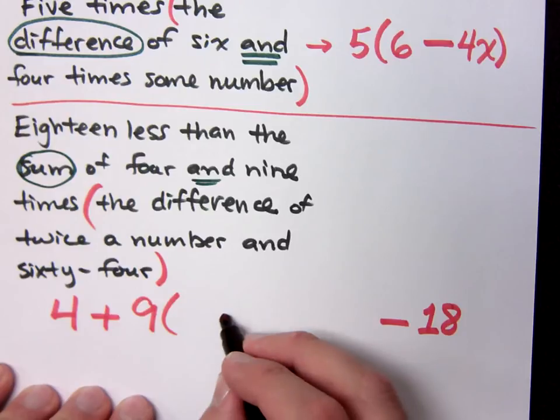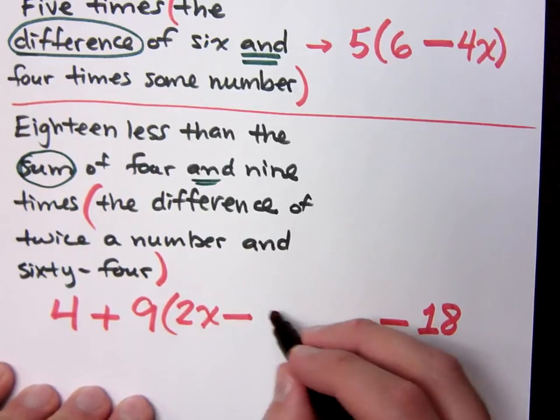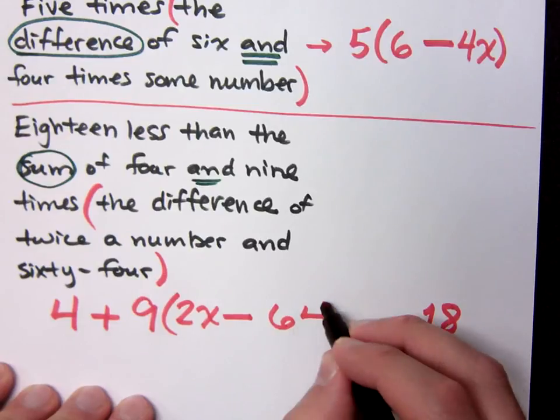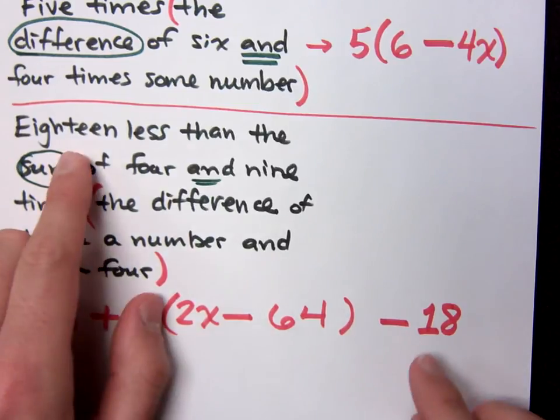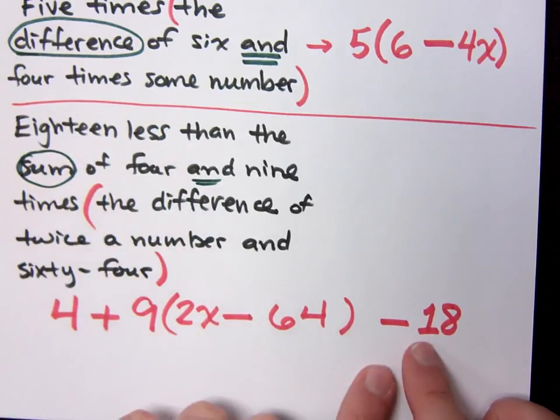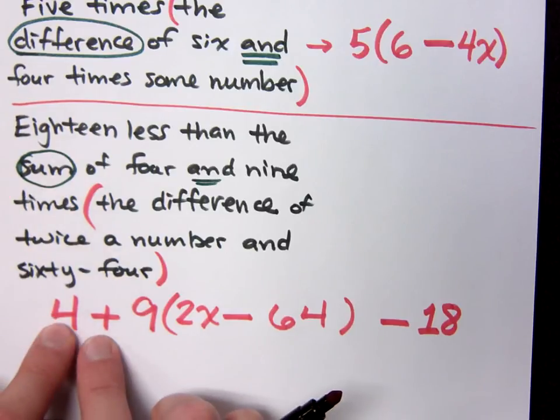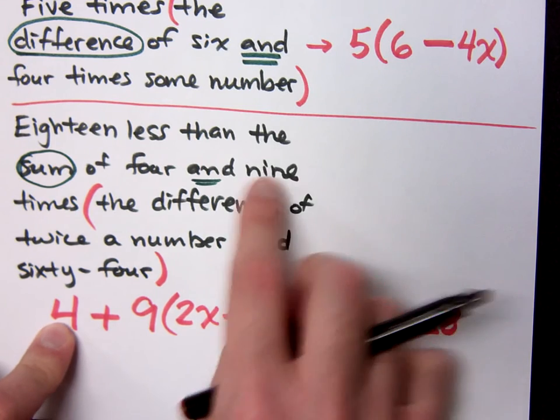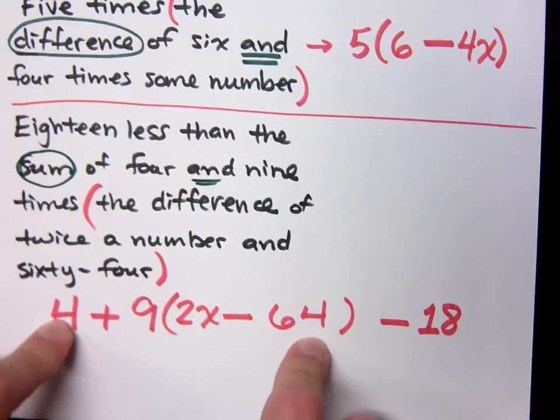Eighteen less than, so I take 18 away from what? A sum of four. Four is the first part of the sum. What's the second part of the sum? Nine. Nine times the difference of blah, blah, blah. Nine times that guy.